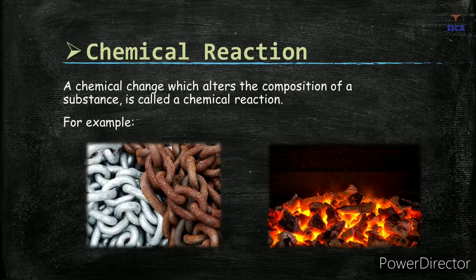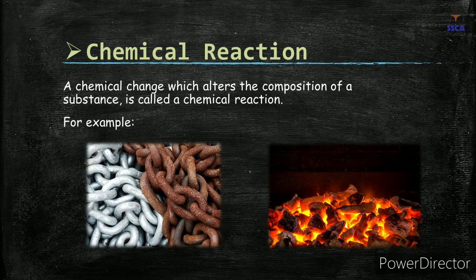Let's start with the chemical reaction. A chemical reaction is simply a chemical change. Matter undergoes two types of changes: a chemical change and a physical change. A chemical change is a change in which the composition of a substance changes, whereas a physical change is one in which only the external appearance or structure changes, not the composition.